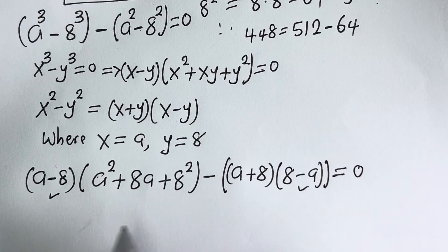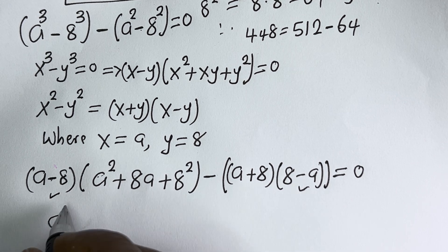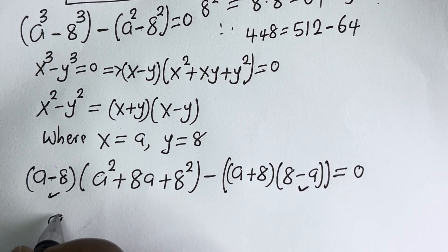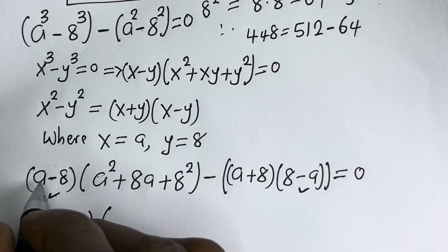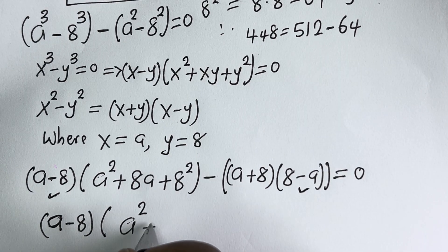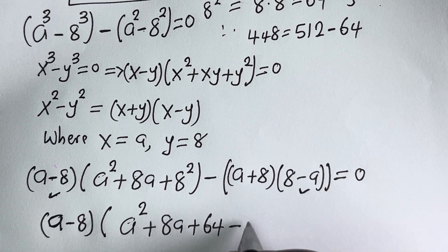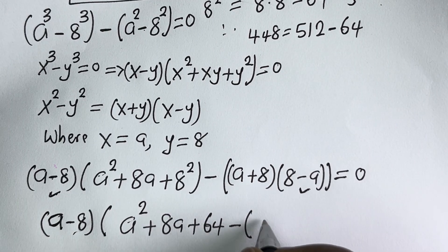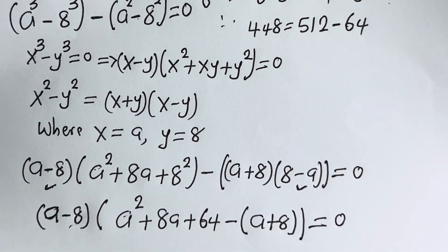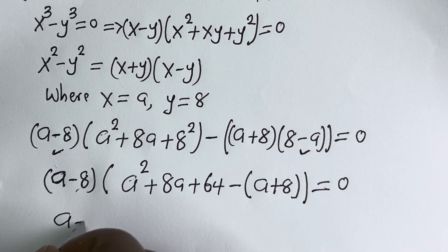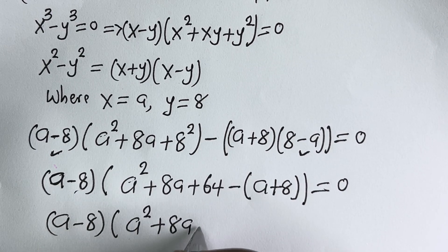Here (A minus 8) is common — let's bring it out. We have (A minus 8) multiplied by [(A² + 8A + 64) minus (A + 8)] equals 0.